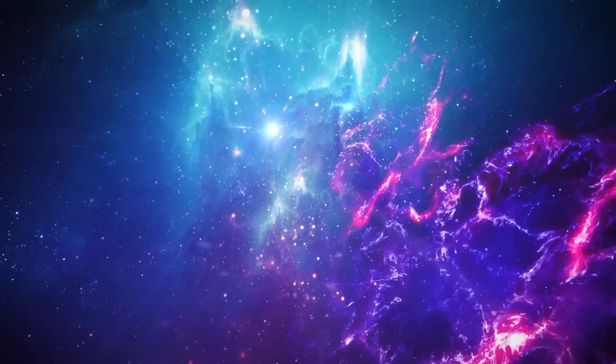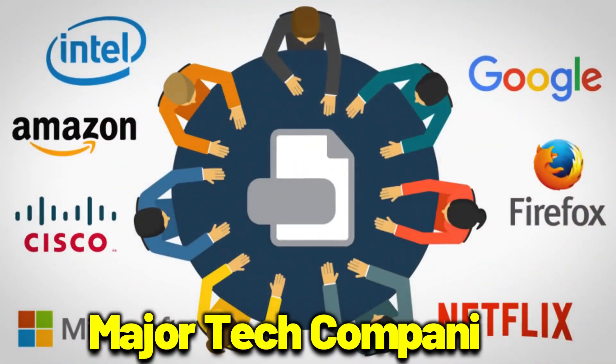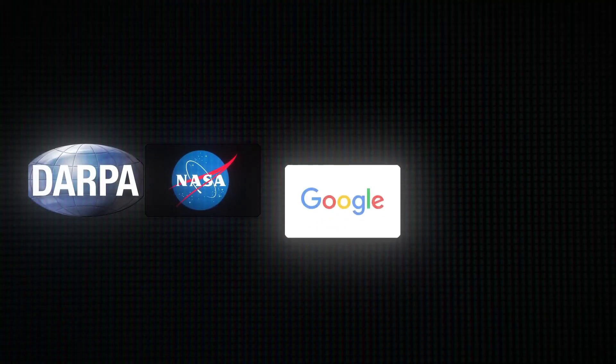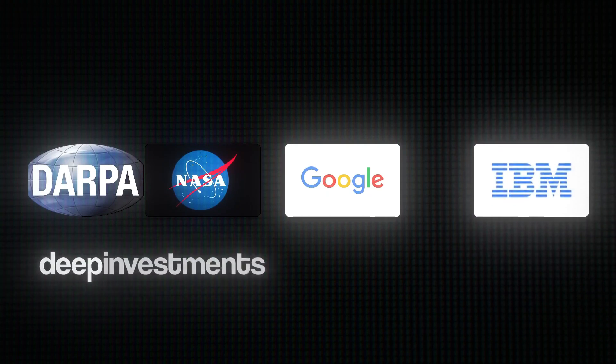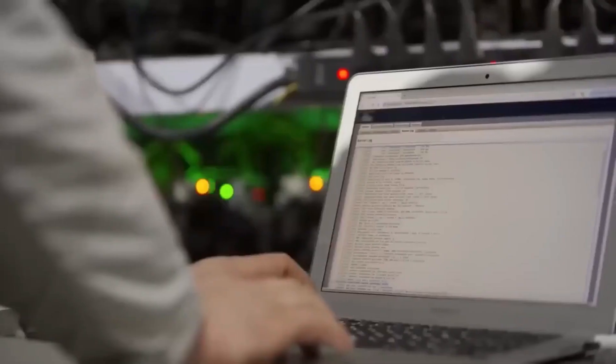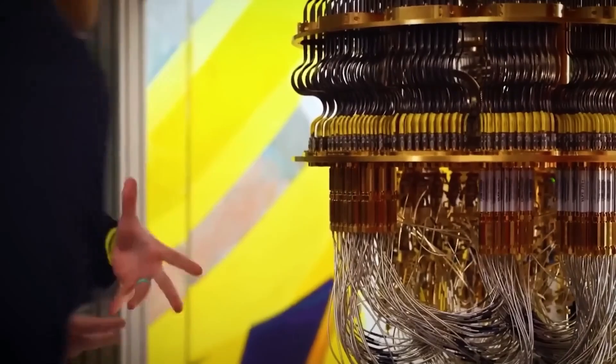As soon as an anomaly like this surfaces, government agencies, defense contractors, and major tech companies are bound to take notice. With organizations like DARPA, NASA, Google, and IBM deeply invested in quantum computing, the question is: are they already conducting their own secret experiments? And if so, just how far ahead are they compared to what's been publicly revealed?